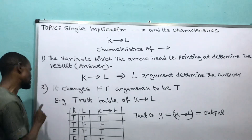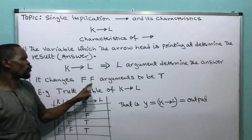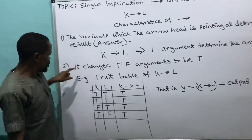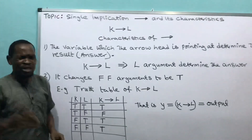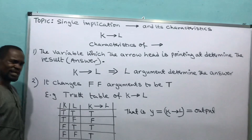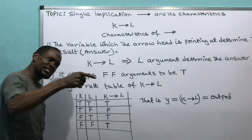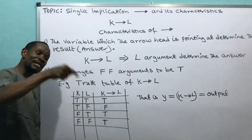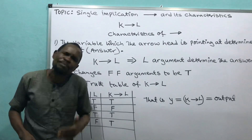The second characteristic: it changes false-false arguments to be true. He changes what? False-false arguments. If two of you said false-false, he said no — there's no way two of you can say false-false. It will change it to the word true. The second characteristic is that he changes false-false statements to the word true.